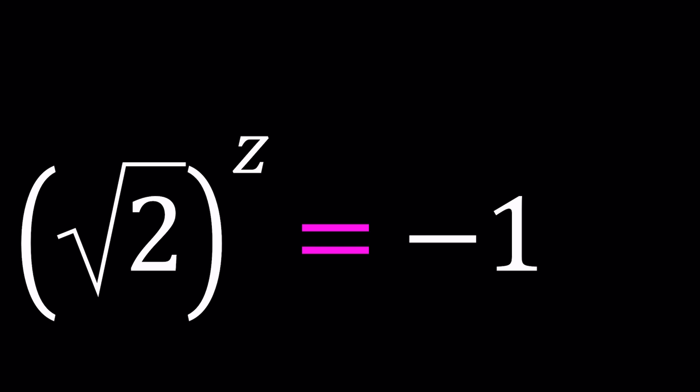So we have square root of two to the power z equals negative one. So we're looking for a complex number when square root of two is raised to that power will give us negative one.